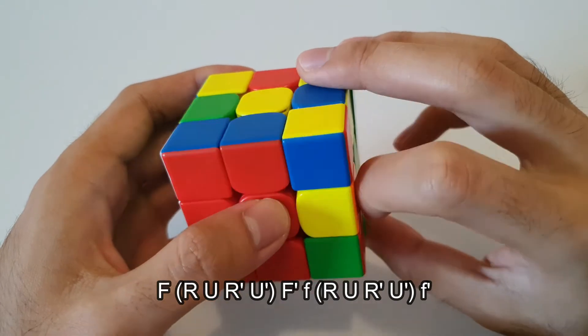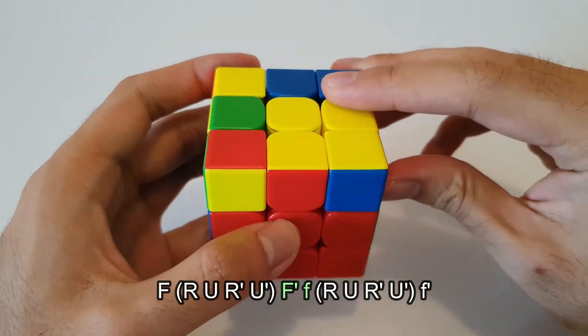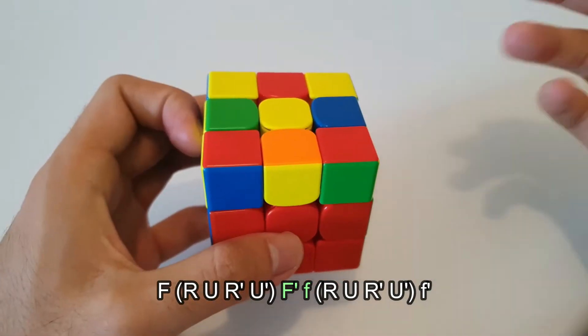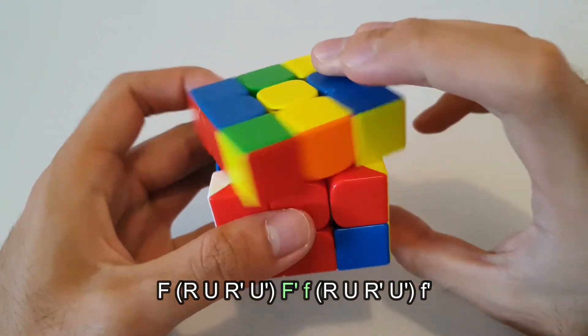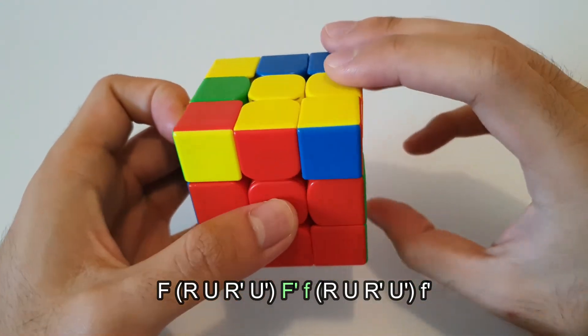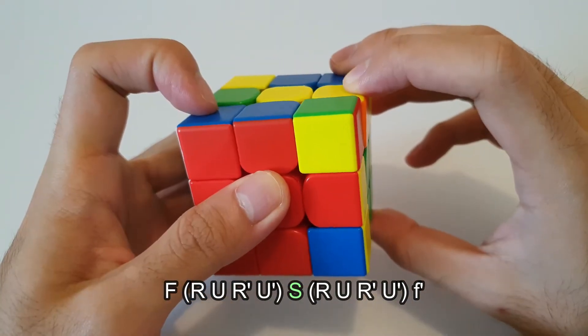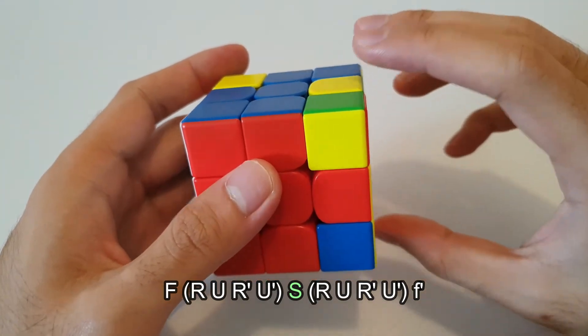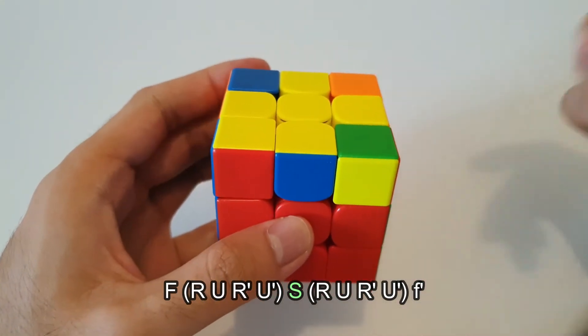And just a bit more of an advanced tip for this particular case. Notice how you do an F sexy, and then at this stage you have to do an F' and then a wide F. So perhaps a quicker way to do this algorithm is instead of doing F' followed by the wide F move, you can instead do a slice layer move, like this. And that is the same as the F' followed by wide F, but you only need to do one move, and could make the algorithm a bit faster as well.